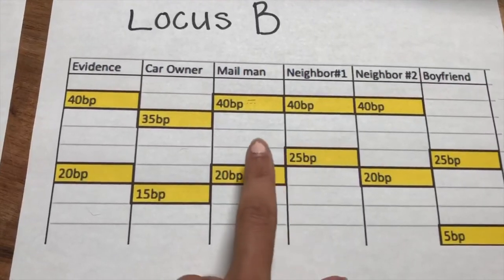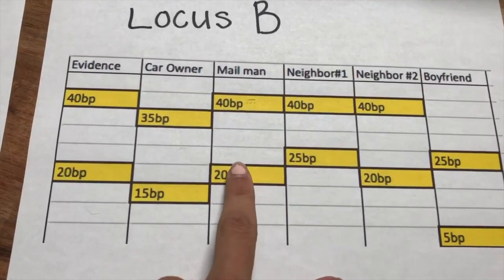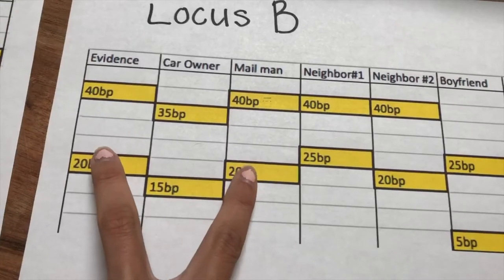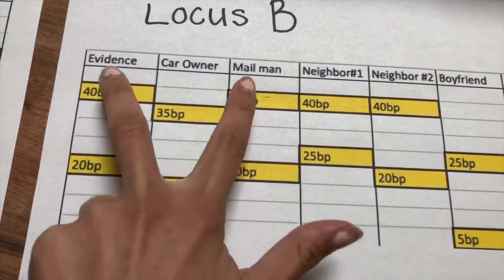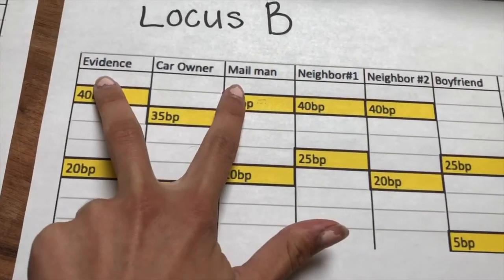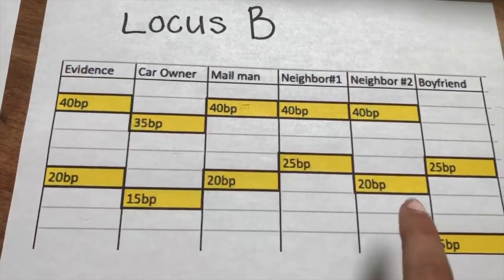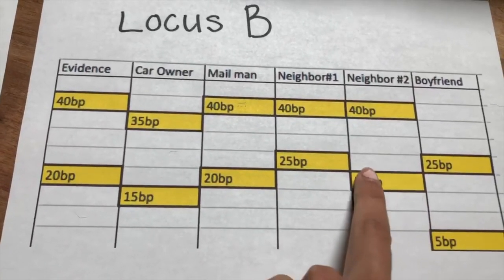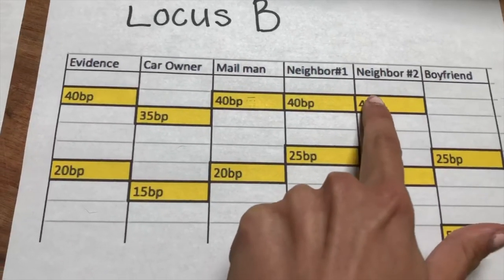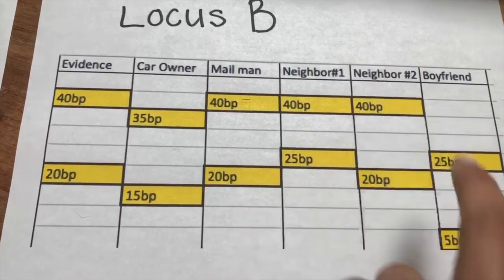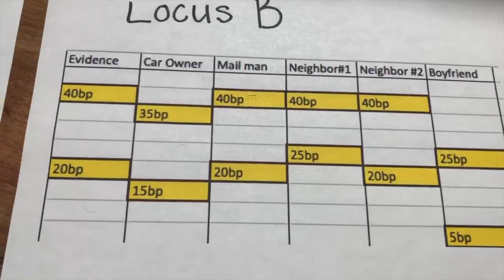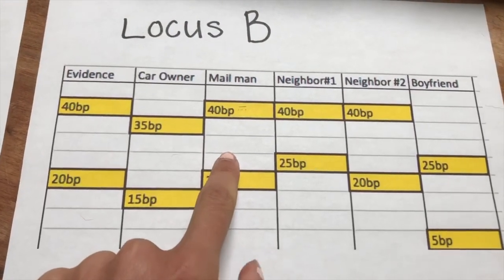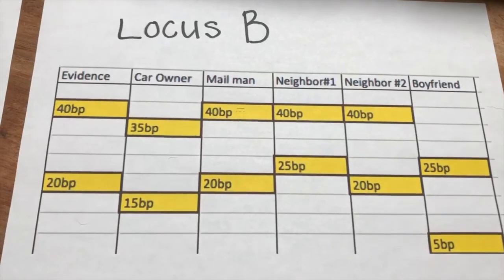Now to locus B. We run through the same process, but we will only have to look at those two suspects to find the match, because the alleles have to match at all loci tested for it to be considered from the same person. At locus B, we see that the mailman and neighbor number two match the evidence at 40 base pairs and 20 base pair lengths. The mailman matched the evidence at both loci, and therefore he is the one that broke into the car that night.